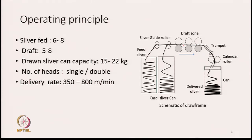Eight slivers being fed in parallel to the drafting zone will be drafted together — by drafting we mean they will be stretched. The drafted fleece which comes out from the nip of the front roller is in the form of a thin wave or fleece, very flimsy and very weak. This fleece which moves out from the machine is then made to converge and pass through what is known as a trumpet — which we have already learned about in carding machines. When the wave passes through the trumpet, it gets consolidated and this consolidated wave gets transformed into a round-shaped sliver again.